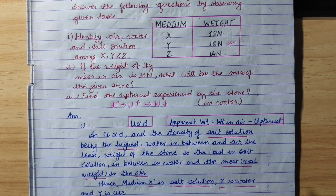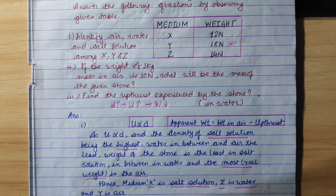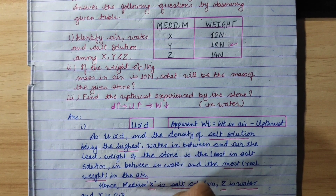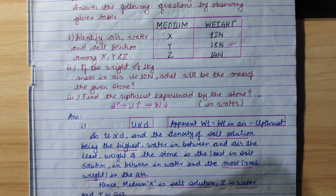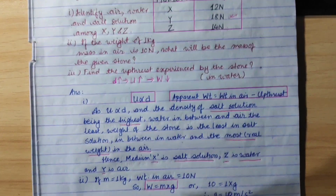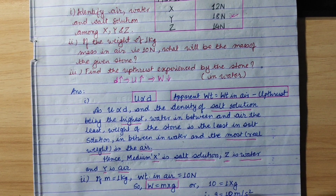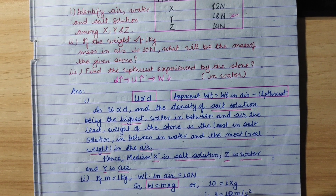The maximum weight, 18 newton, is shown in medium Y. Therefore, medium Y is air, X is salt solution, and Z is fresh water. This concludes the first question.